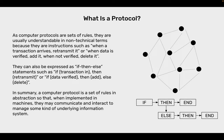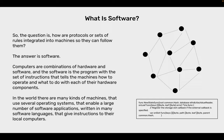As computer protocols are sets of rules, they are usually understandable in non-technical terms because they are instructions such as: when a transaction arrives, retransmit it; or when data is verified, add it; when not verified, delete it. They can also be expressed as if-then-else statements such as: if transaction in then retransmit, or if data verified then add, else delete. In summary, a computer protocol is a set of rules in abstraction so that when implemented in machines they may communicate and interact to manage some kind of underlying information system.